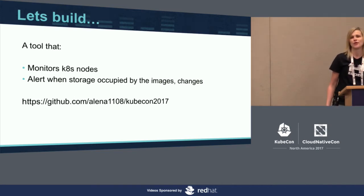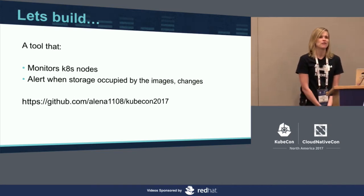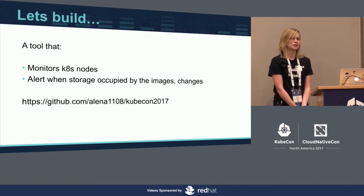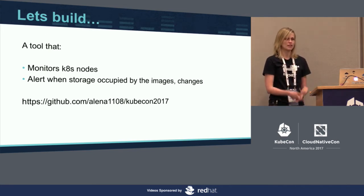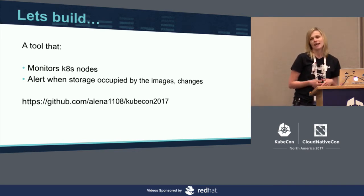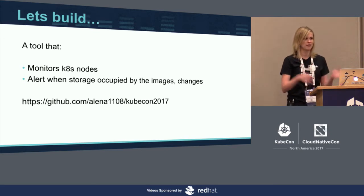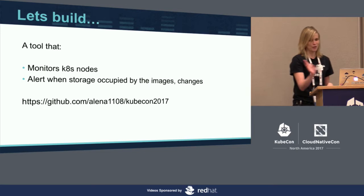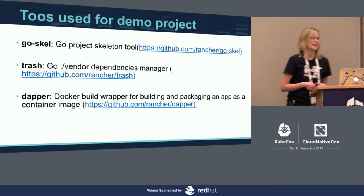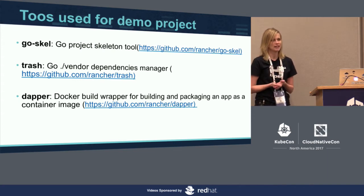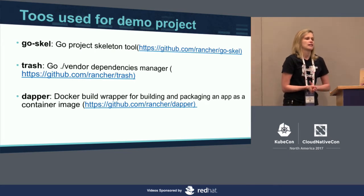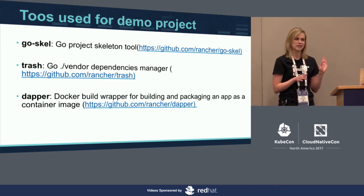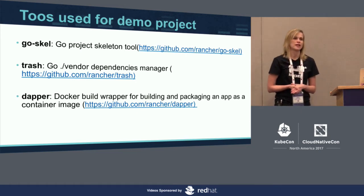The best way to learn something is to build something from scratch. Today we are going to build a tool that monitors Kubernetes nodes and alerts when the storage occupied by images changes. Here's the link to the repo where the tool resides. It's a pretty simple tool, but you'll go from the very beginning to the very end. As a developer, I like to sneak a peek at what people use for development to make their life easier. Here are some tools I use for the demo project — these are all open source tools used at Rancher.